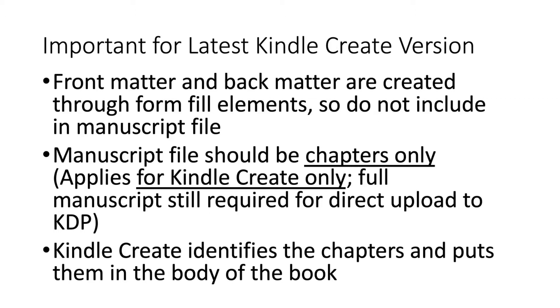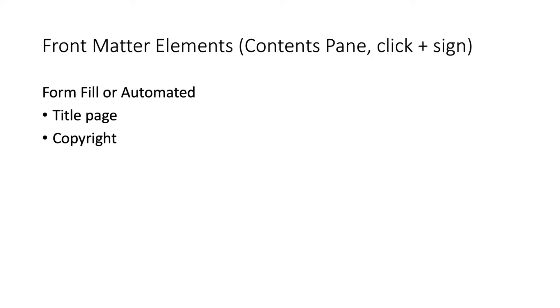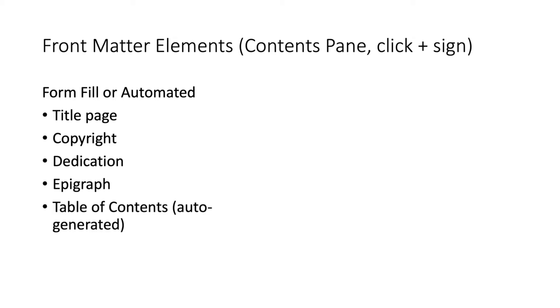Kindle Create identifies the chapters and puts them into the body of the book. In the Contents pane, you click the plus sign and get access to these elements. The following elements are form fill or automated — meaning there's a blank, you enter the information, and it automatically formats the page for you: the title page, the copyright page, the dedication, the epigraph, and your table of contents, which will be auto-generated by scanning your file.